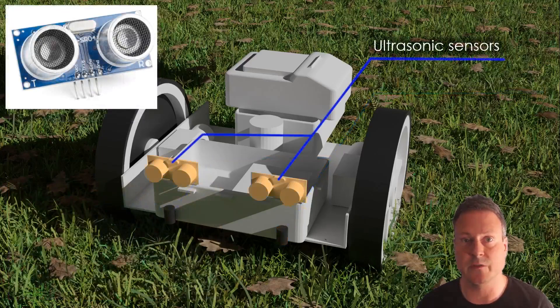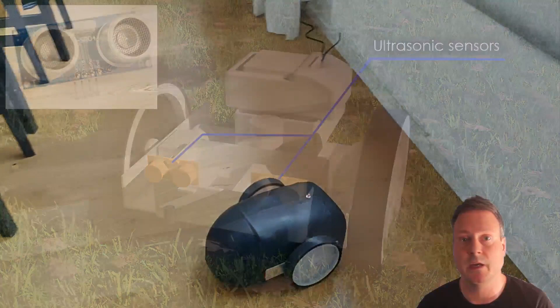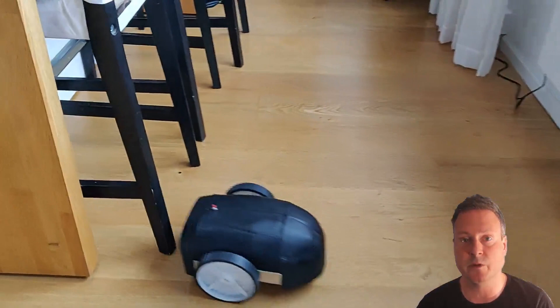The ultrasonic distance sensors in the front are an extra precaution to stop the robot from colliding with objects such as humans that are inside the perimeter wire and get closer than 10 centimeters in front of the robot when it's driving forward.